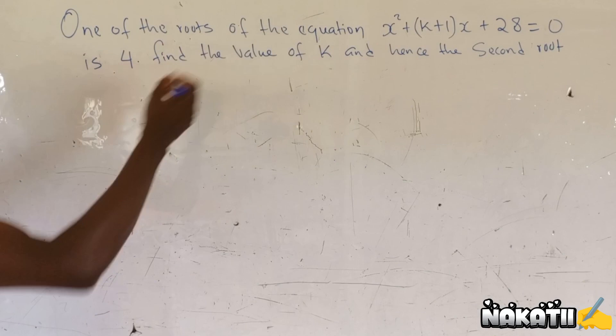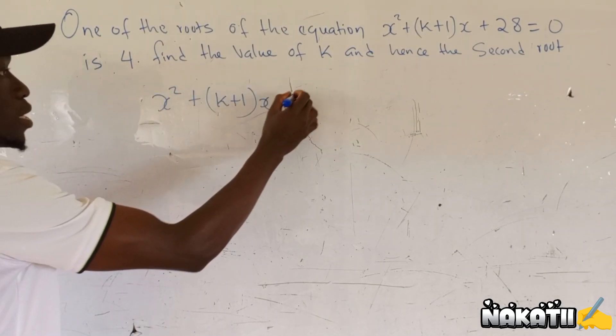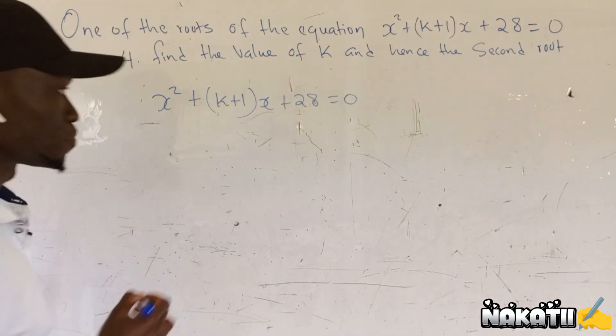Now we can write it here. We have x squared plus k plus 1 x plus 28 equals 0.